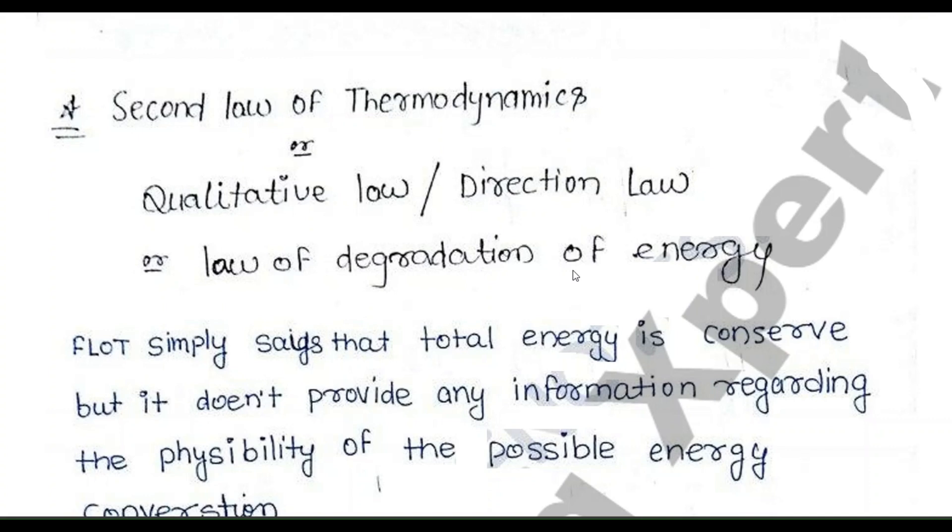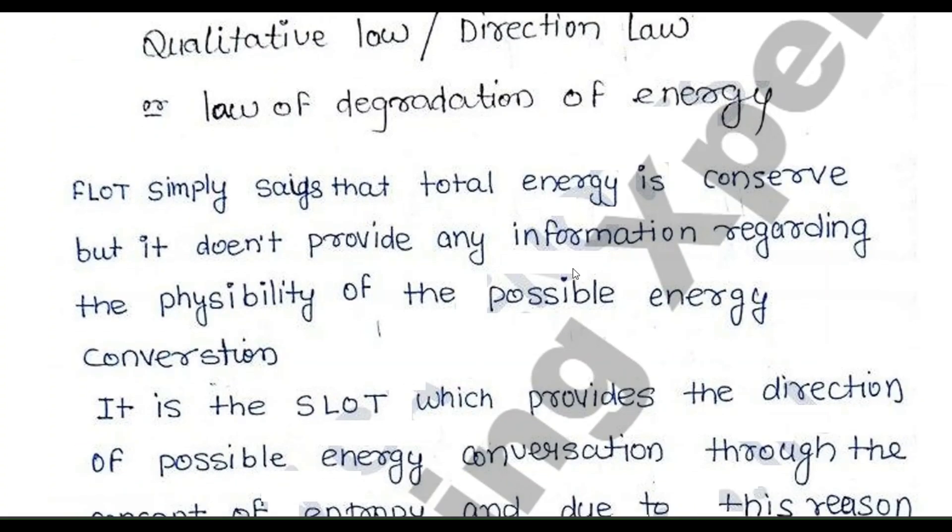Let's start. In the First Law, it was basically a quantitative law where we conserve energy. But the Second Law is about quality, like the direction law or the law of degradation of energy. It tells whether the process will take place or not. The First Law only tells how energy transfers from one form to another, but doesn't say whether it's possible to transfer or not.